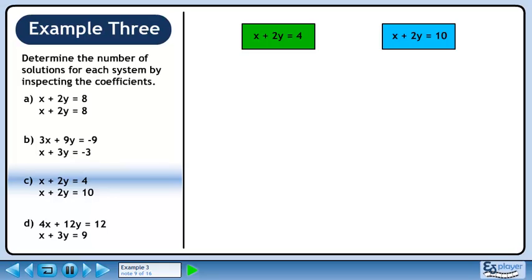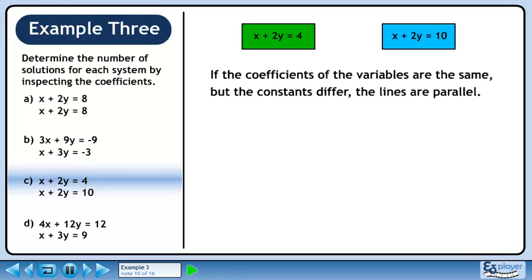In part c, we have x plus 2y equals 4 and x plus 2y equals 10. If the coefficients of the variables are the same, but the constants differ, the lines are parallel.